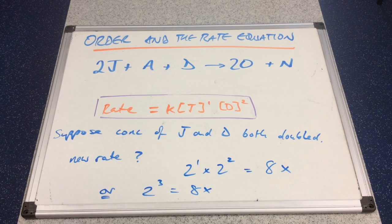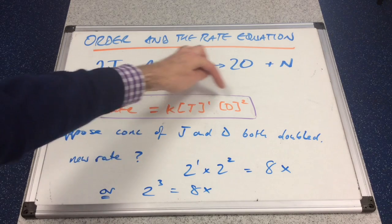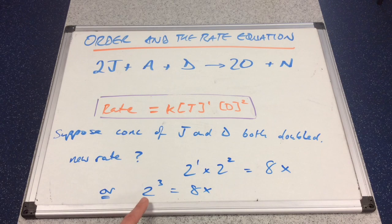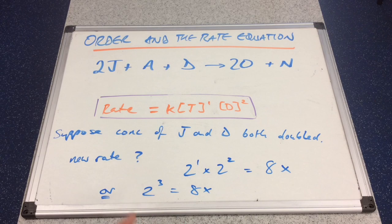Because we've done the same thing to both reactants, we can bring in the overall order. We doubled everything, and the overall order is 3 (1 plus 2), so the overall effect on the rate is 2 raised to the power 3 — still an 8-fold increase. You can only use this shortcut if you do the same thing to everything.